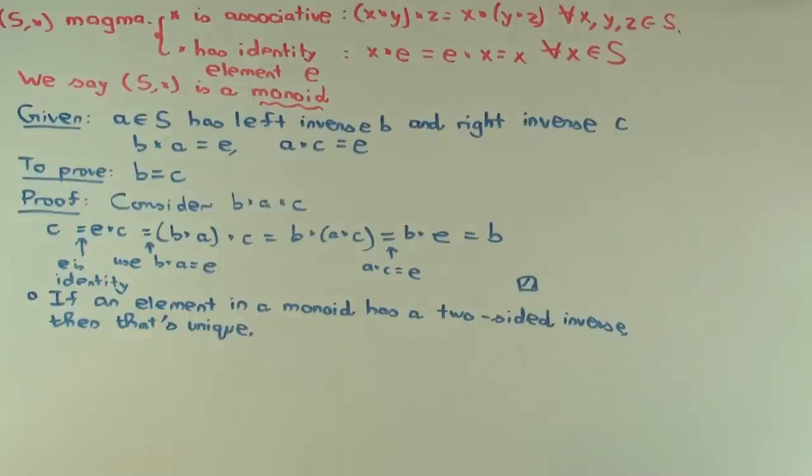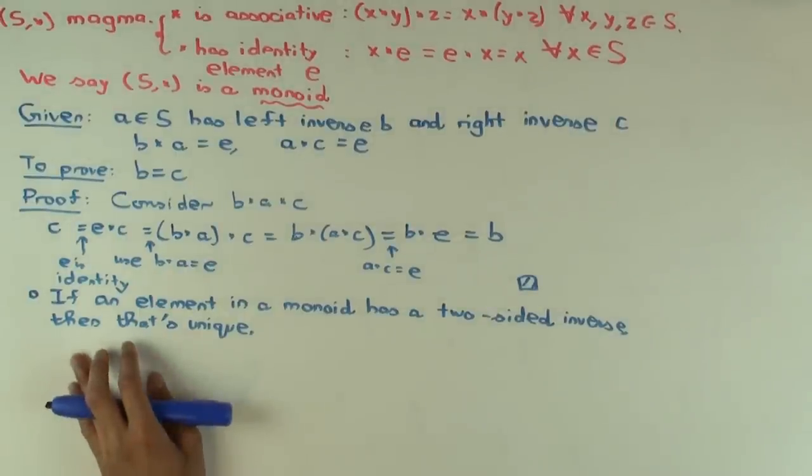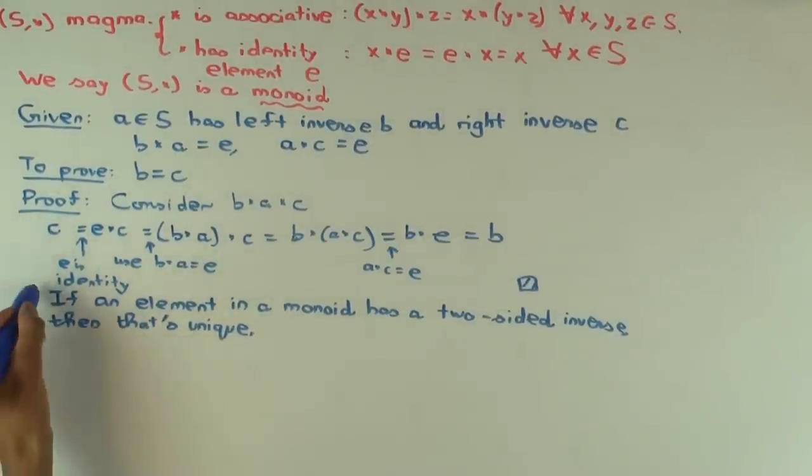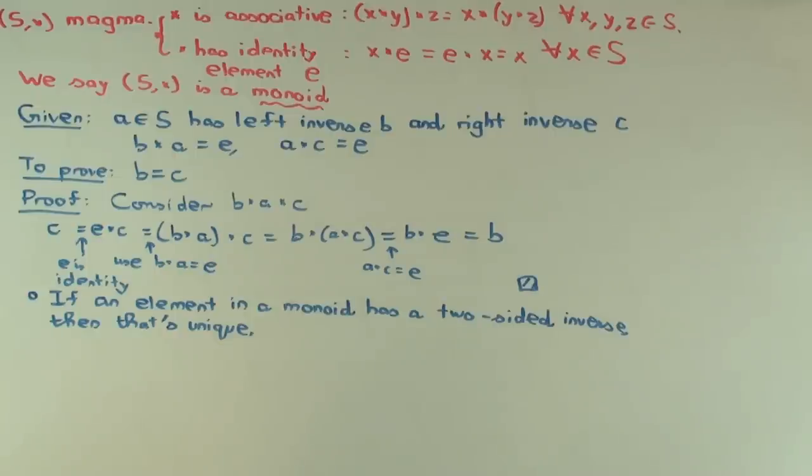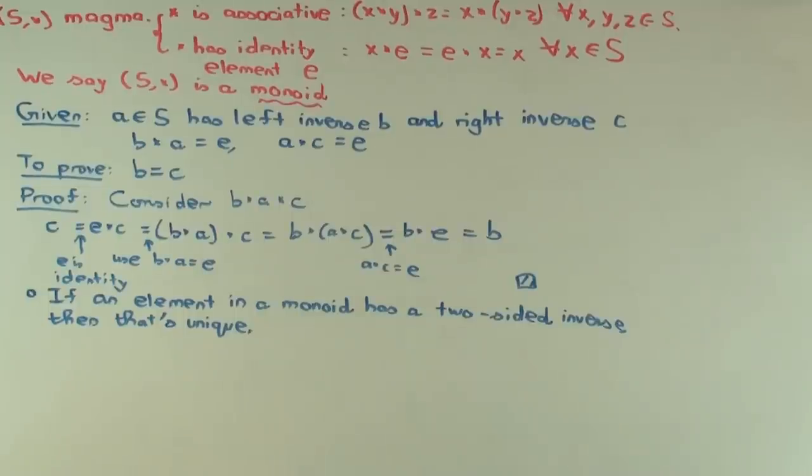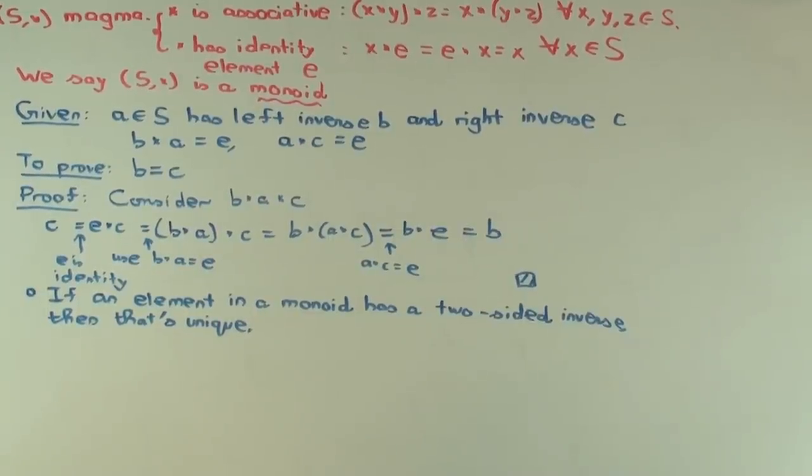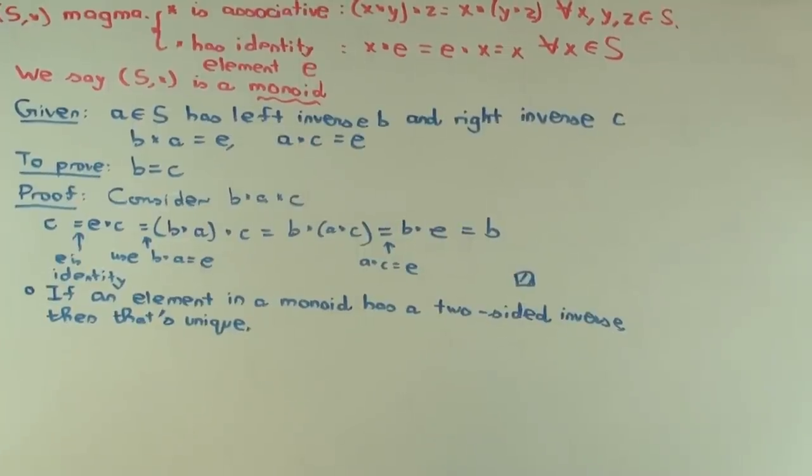Two-sided inverse means there's another element which is both a left and a right inverse. But how does it follow that you can have at most one two-sided inverse? Well, you treat one of them as left and the other one as right. If both are two-sided, you can definitely do that.